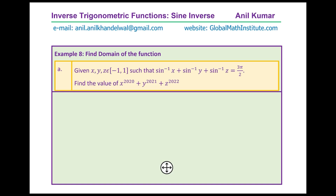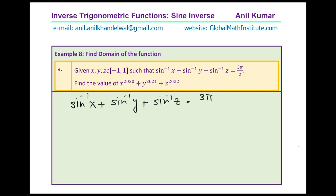The last question: given x, y, z belong to the interval minus 1 to 1 such that sine inverse x plus sine inverse y plus sine inverse z equals 3 pi by 2, find the value of x to the power 2020 plus y to the power 2021 plus z to the power 2022. This is a question seen in competitive exams. We have the equation sine inverse x plus sine inverse y plus sine inverse z equals 3 pi by 2.